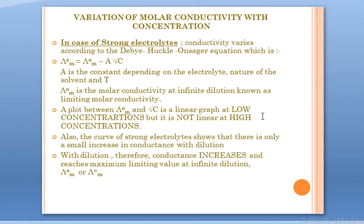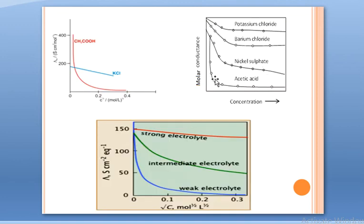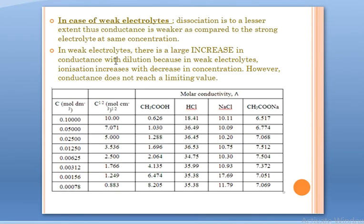In the case of weak electrolytes, the example taken is acetic acid — the lowest plot in the graphs. If you have two electrolytic cells with the same concentration, one with a weak electrolyte and one with a strong electrolyte, the weak electrolyte will have lower conductance because its degree of dissociation is lesser. Thus its conductance is weaker compared to the strong electrolyte at the same concentration.